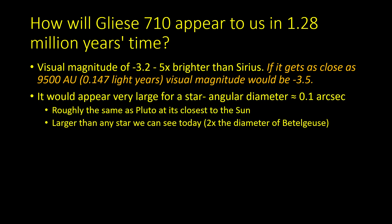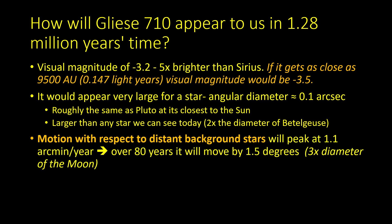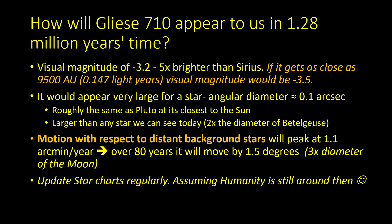To people observing it at its closest approach, its visual magnitude will be −3.2, which is five times brighter than Sirius, the current brightest star. If it gets as close as 0.147 light years, its visual magnitude would be −3.5, even brighter still. It will be the brightest star in the sky, roughly the same angular diameter as the dwarf planet Pluto at its closest to the Sun, and larger than any star we can see today. We normally think of stars as fixed, but Gliese 710 will actually move relatively rapidly compared to background stars. Over a period of 80 years it will move through the sky by about one and a half degrees — three times the diameter of the Moon — so we'll have to update our star atlases every few years.